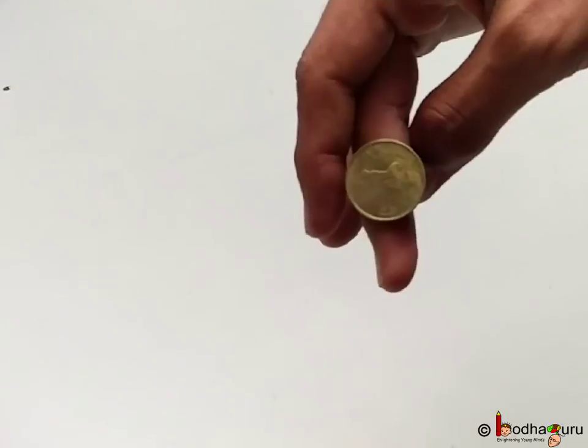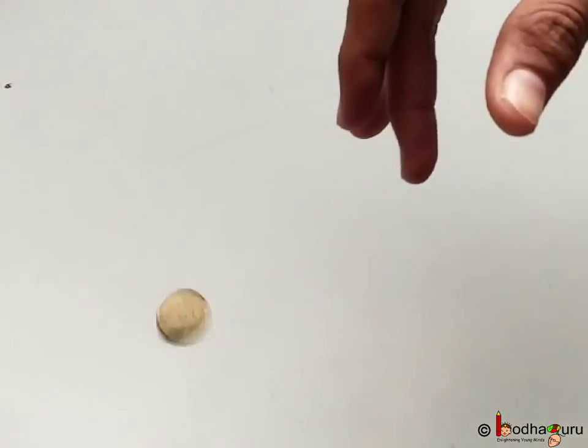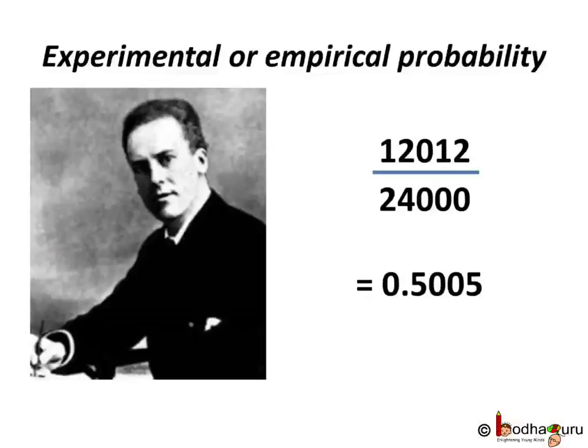This probability is based on the result of an actual experiment, so we can call it experimental or empirical probability. Statistician Carl Pearson tossed a coin 24,000 times and got 12,012 heads. So the experimental probability of a head was 12,012 divided by 24,000, which is 0.5005.